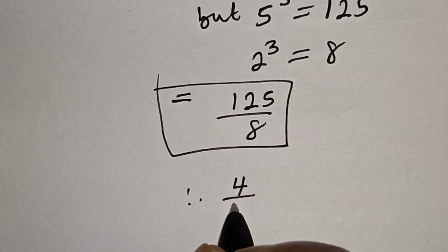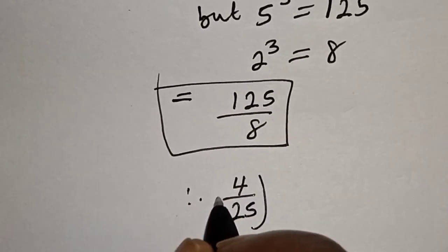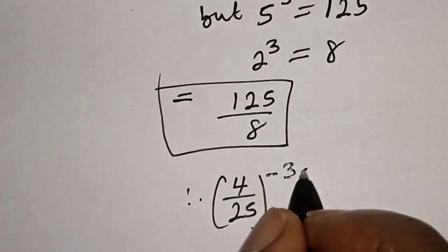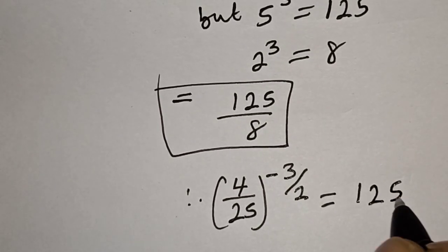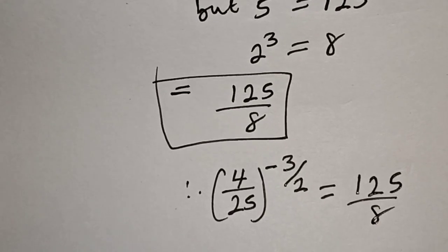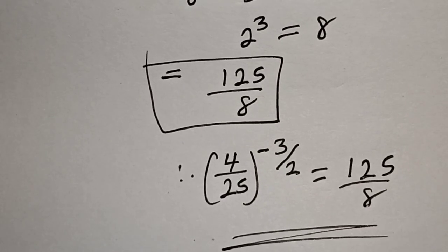Therefore, 4 divided by 25, raised to the power of minus 3 over 2, is equal to 125 over 8. And that is our final answer.